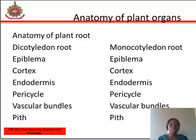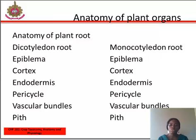The last feature is the pith. In dicot, pith is less developed or absent. The features of monocotyledonous roots are similar to those of dicotyledonous roots. However, the number of xylem bundles is more than 6 in monocotyledon roots. Exceptionally, in onion the number of xylem bundles is 2 to 6, and the pith is very well developed in monocotyledon roots.